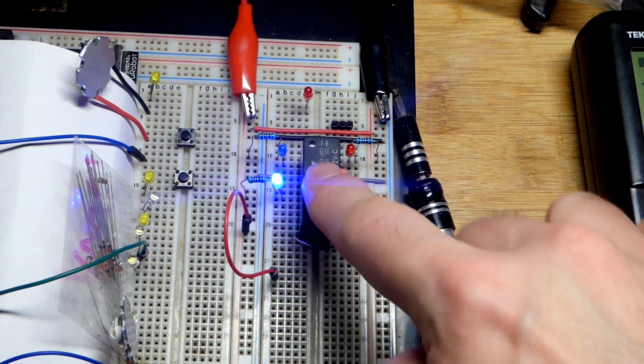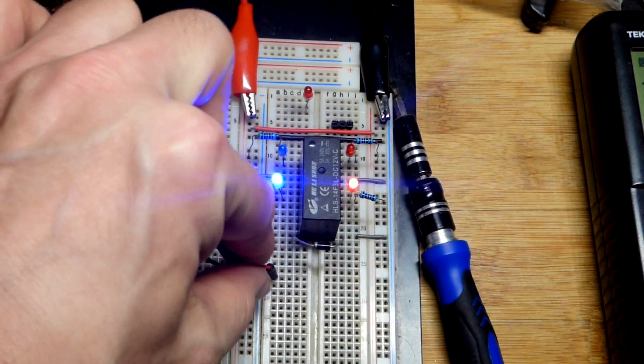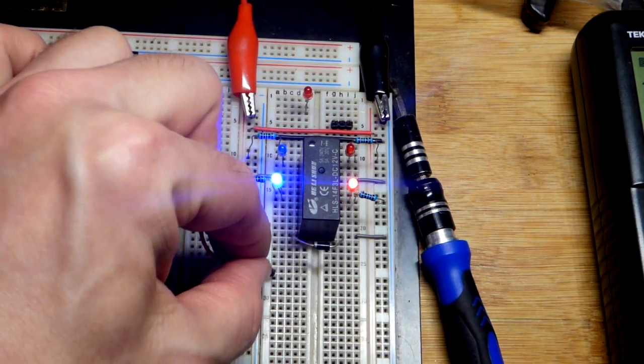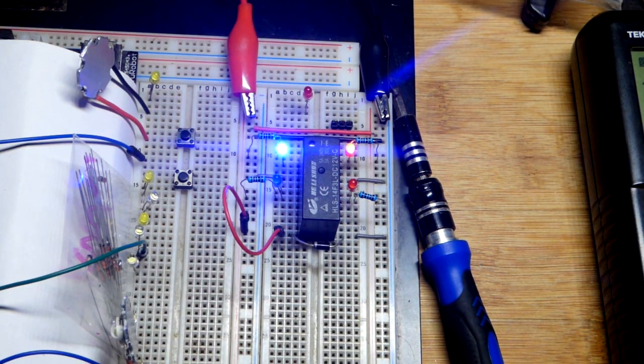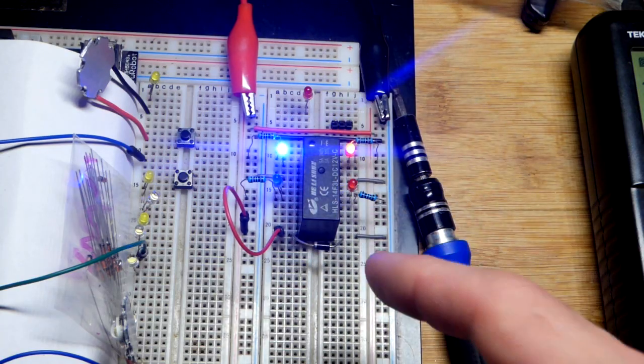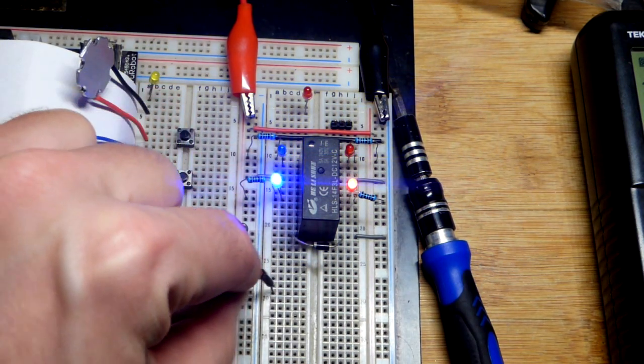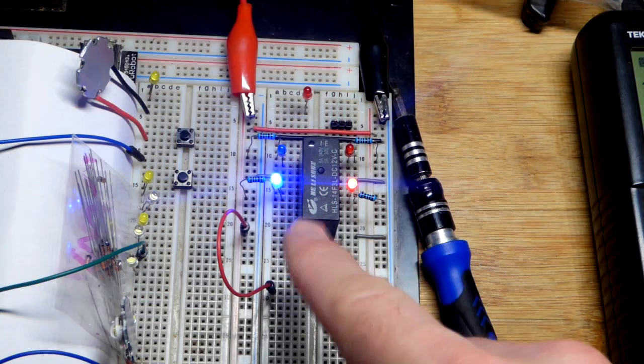So now here we have a relay component. I'm using 12 volts to power everything, but you don't have to. But we do need 12 volts for the coil because it's a 12 volt relay - that's what that means. So there we go, we energized the coil and it switched position. When we release power, the coil doesn't stop current